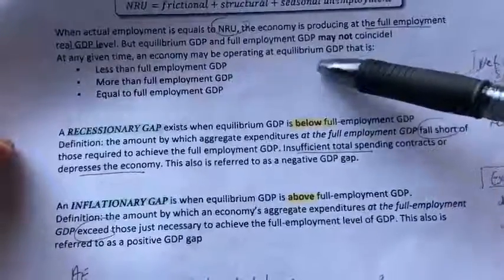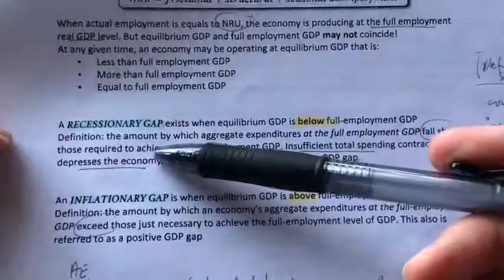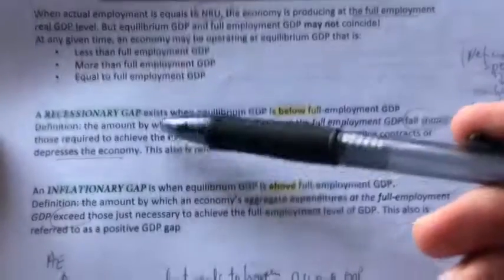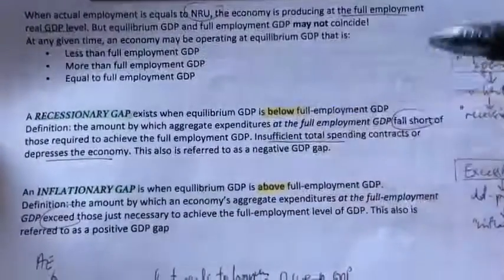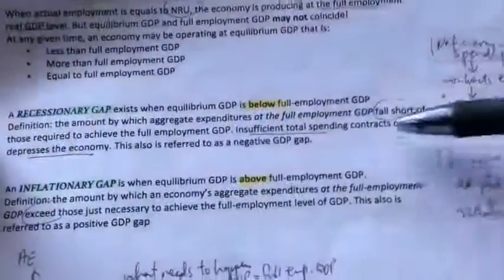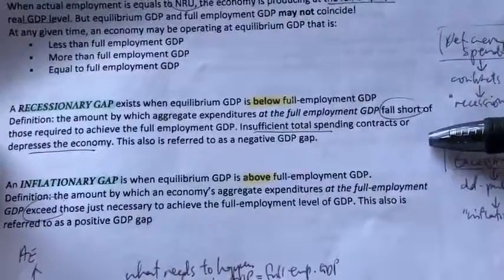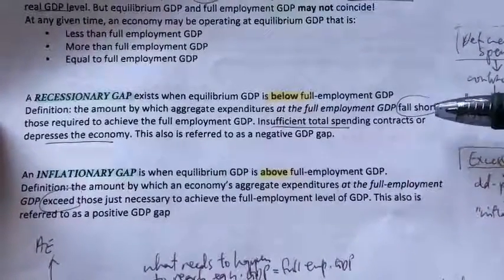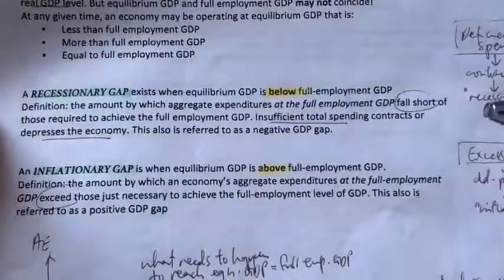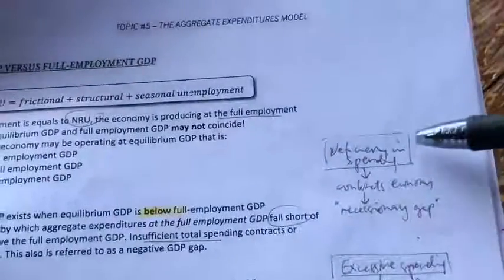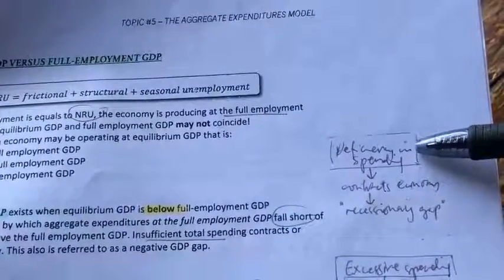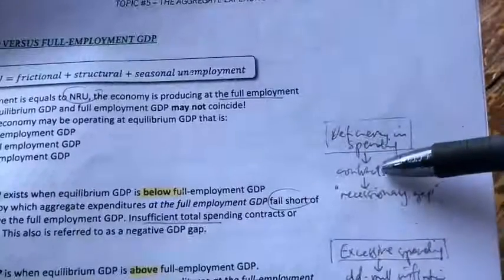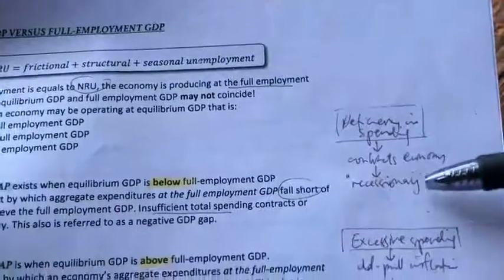When our equilibrium GDP is less than full employment GDP, we have a situation called a recessionary gap. A recessionary gap is the amount by which aggregate expenditures at the full employment GDP level falls short of those required to achieve full employment GDP. Basically, there is a shortfall or deficiency in spending — the economy is not spending enough. That is why the economy is being contracted, so there's a contraction happening in the economy.